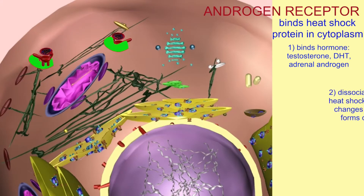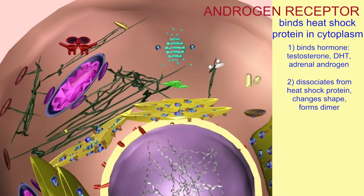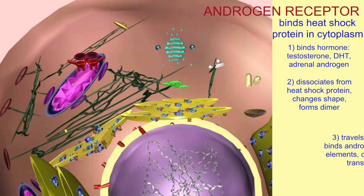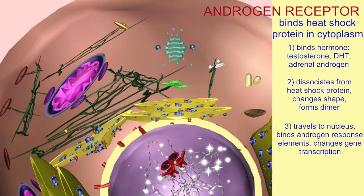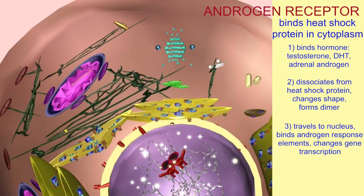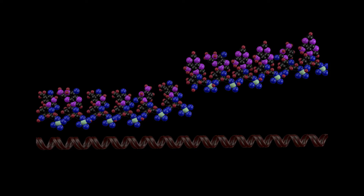It will then form a dimer composed of two androgen receptor proteins, travel to the nucleus, and bind at the androgen response elements of specific genes, changing their levels of transcription.